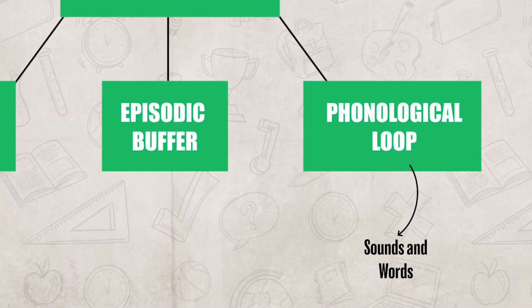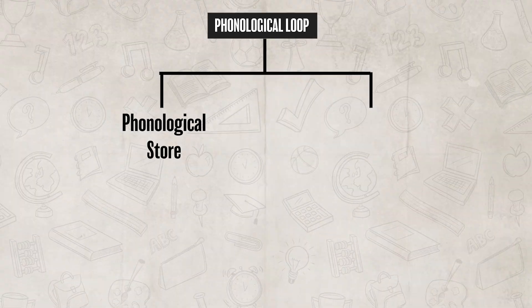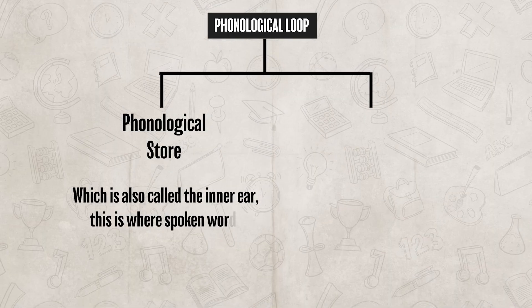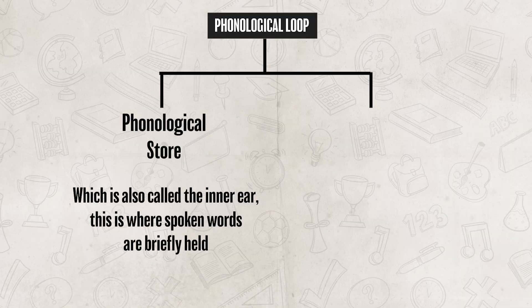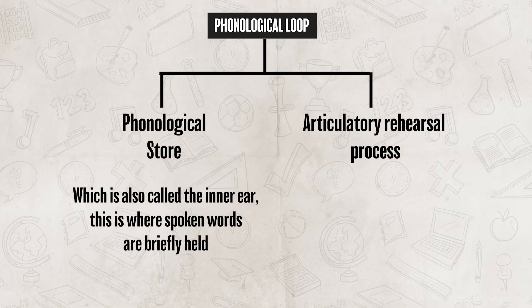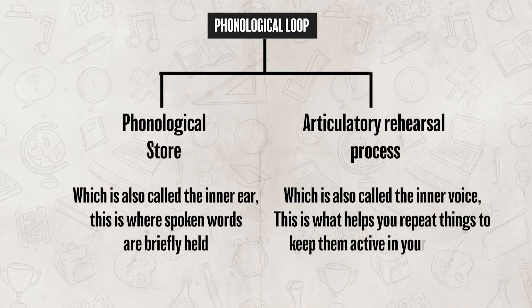Up next there is the phonological loop, which deals with sounds and words. This can be broken down into two parts: the phonological store, also called the inner ear, where spoken words are briefly held; and the articulatory rehearsal process, also called the inner voice, which helps you repeat things to keep them active in your memory. For instance, when you hear a phone number and keep saying it to yourself just long enough to dial it — that's your phonological loop in action.